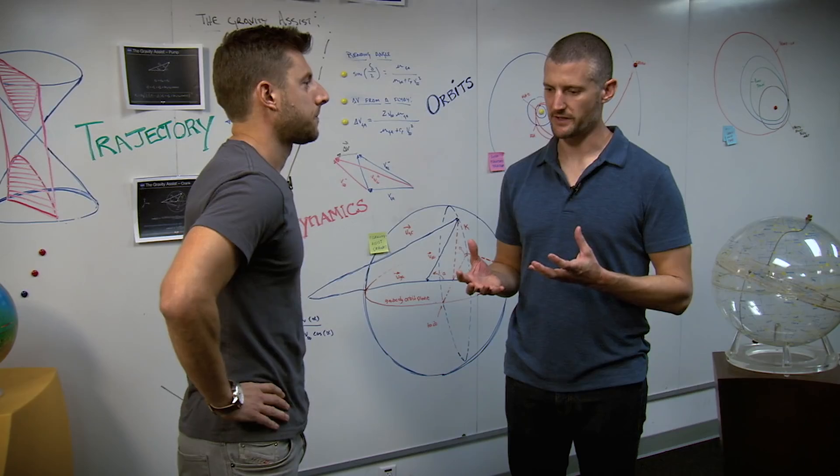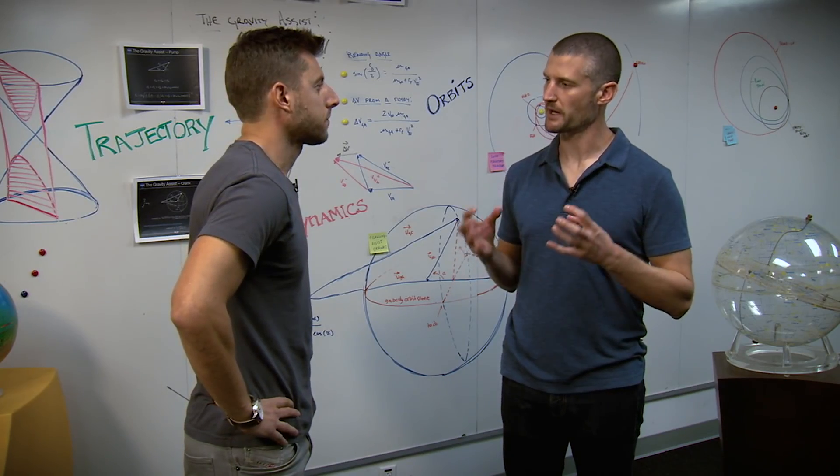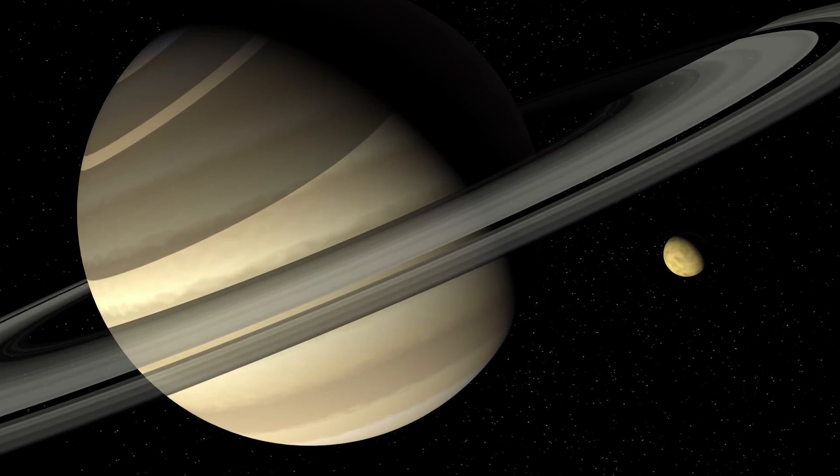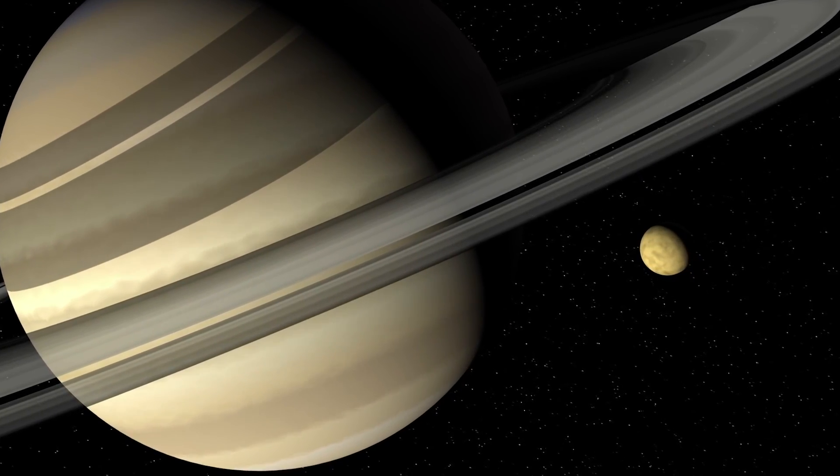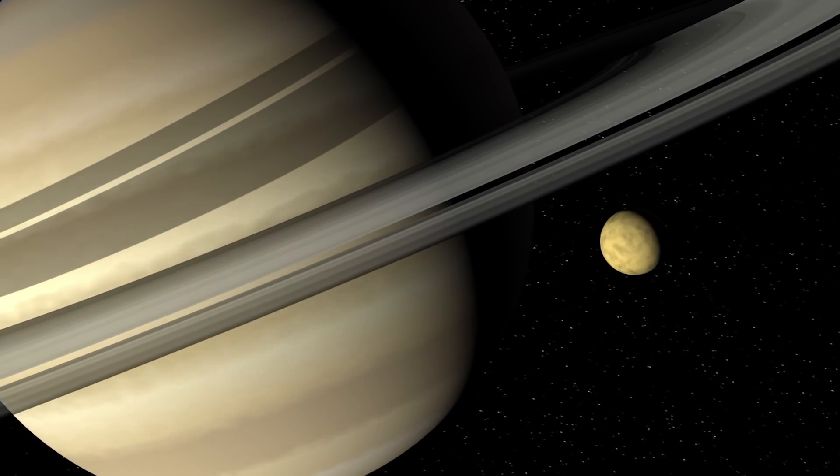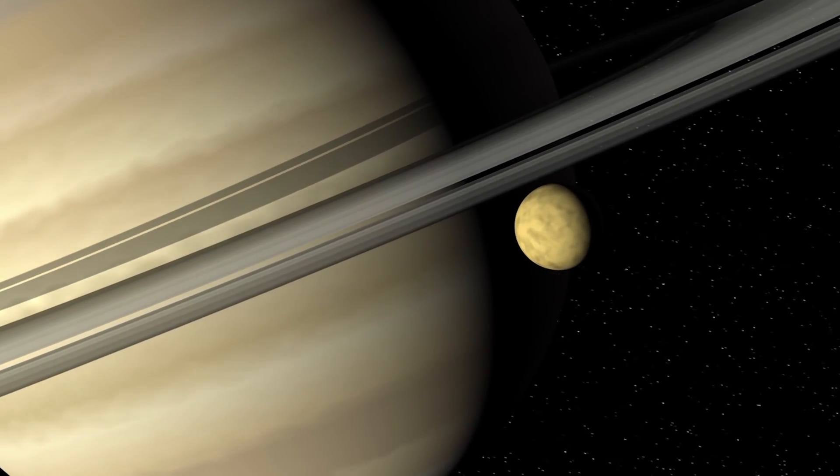This concept of gravity assist, I think a lot of people have heard of it, but maybe not completely understand it. What it essentially means is you're harnessing the gravity of a body that's orbiting another body. For Cassini, Titan, a very massive moon, is orbiting Saturn.